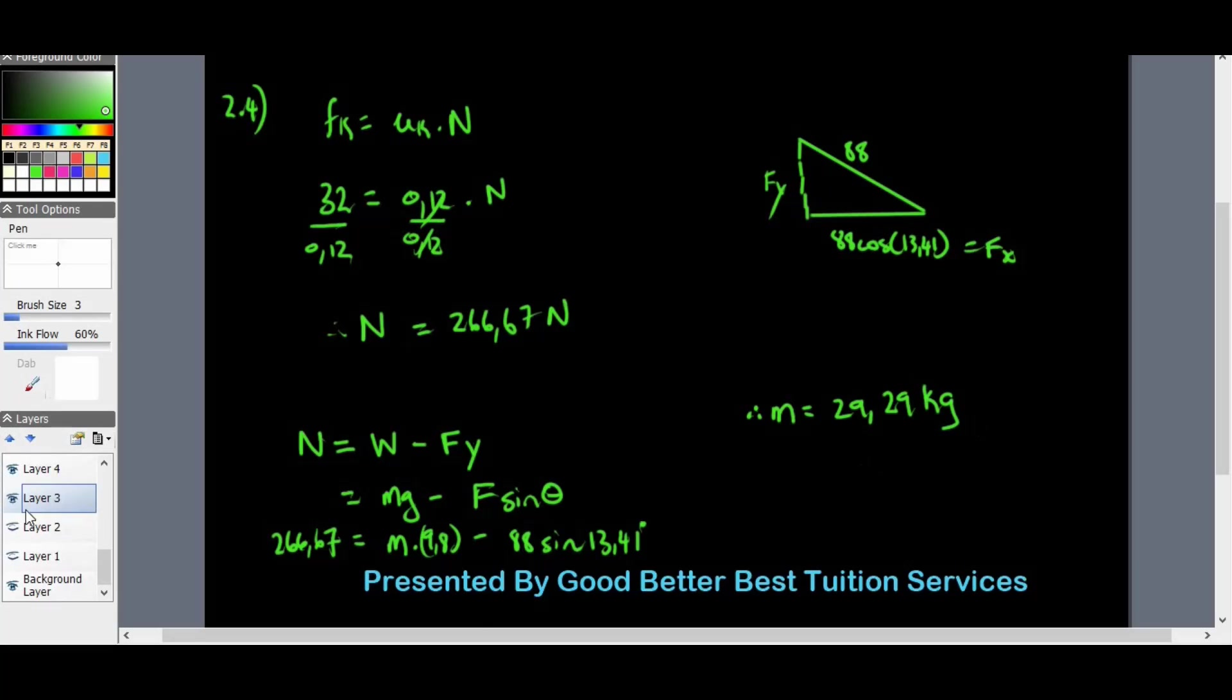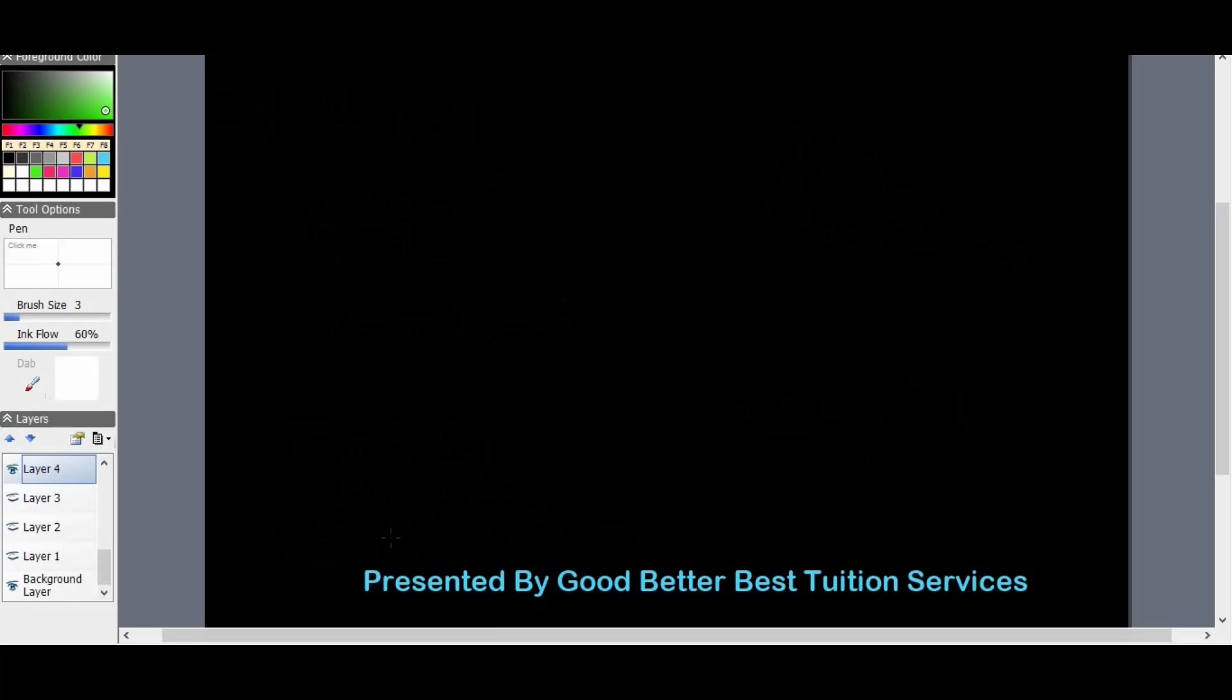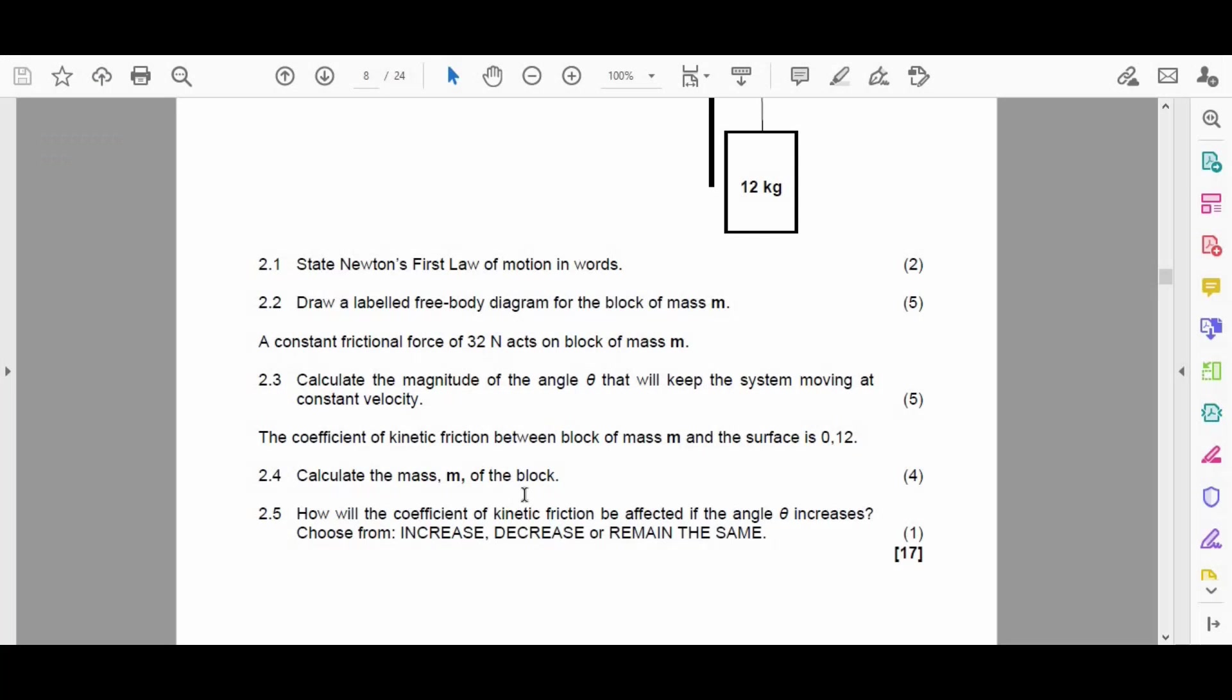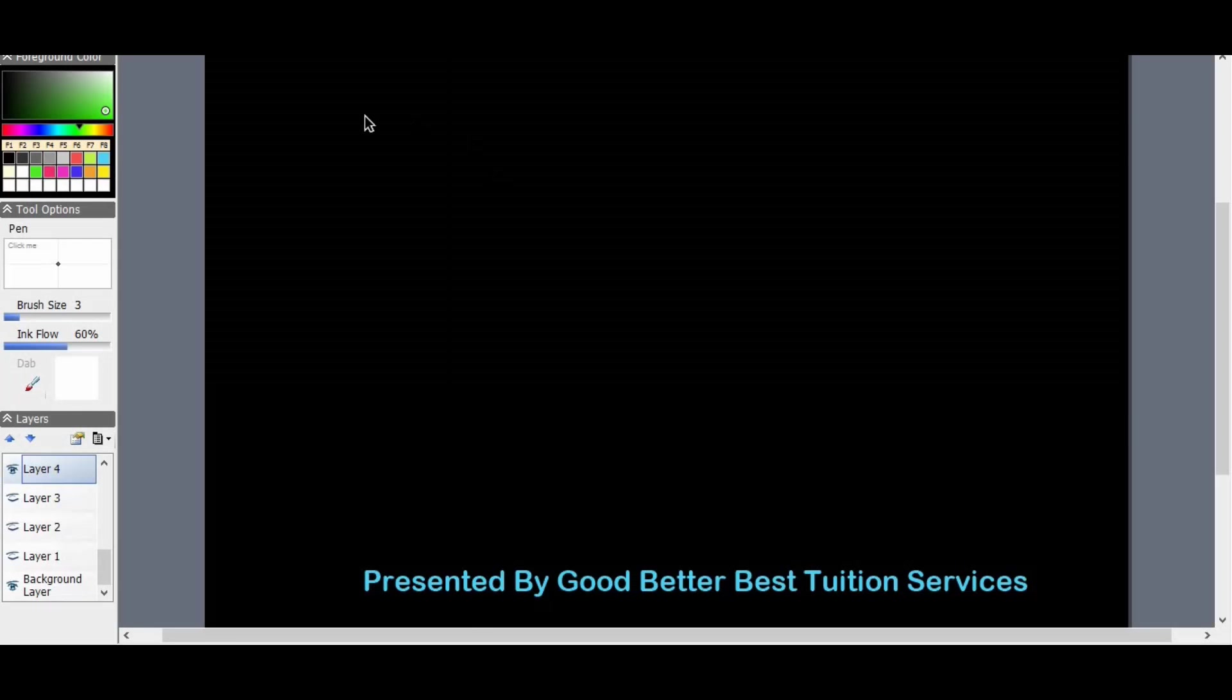We have one final question. 2.5: How will the coefficient of kinetic friction be affected if the angle theta increases? Choose from increase, decrease, or remains the same. By now we should understand that the coefficient of kinetic friction only changes if the surface on which the object is placed changes. The angle does not affect the coefficient of kinetic friction, meaning that this definitely remains the same.